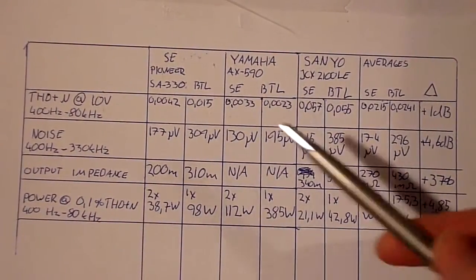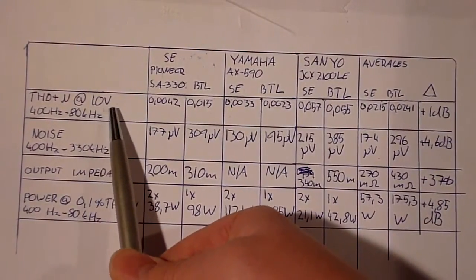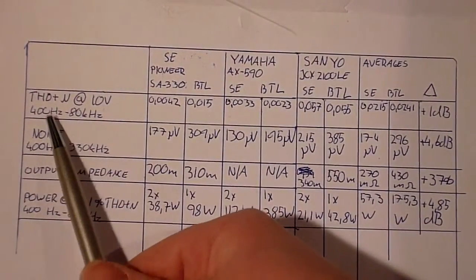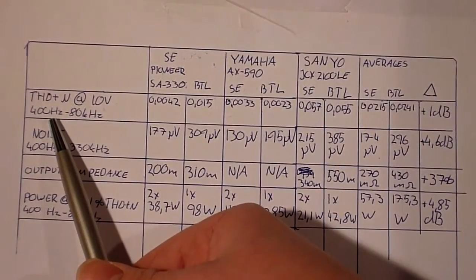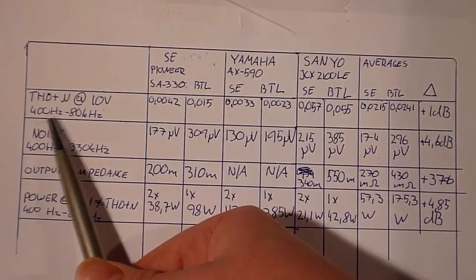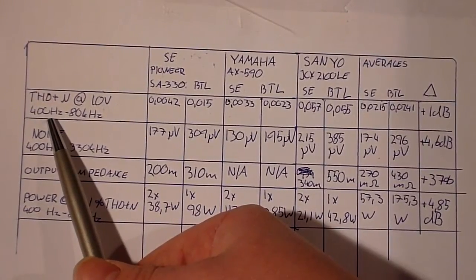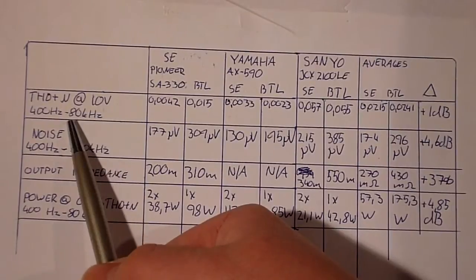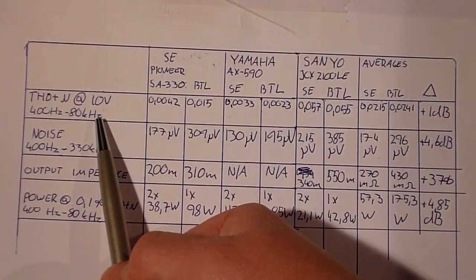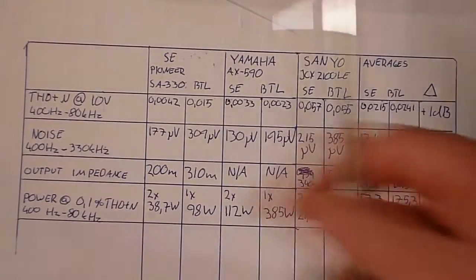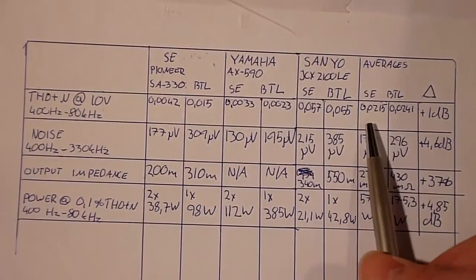So starting with the THD plus N, I measured it at 10 volts into 8 ohms. I had a high-pass filter at 400 Hz to get rid of some mains hum that would be present in the bridge-tied test in particular, and an 80 kHz low-pass filter. And there's not much of a difference at all really.